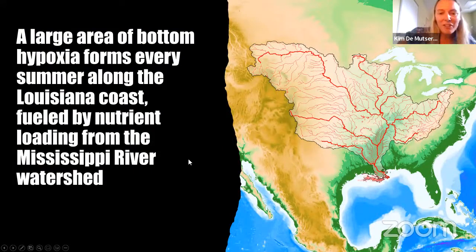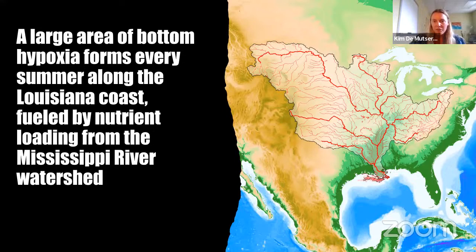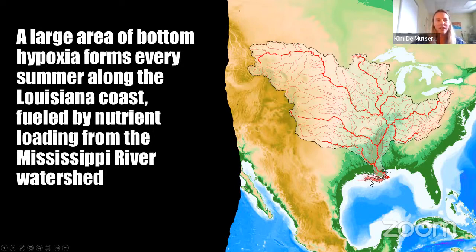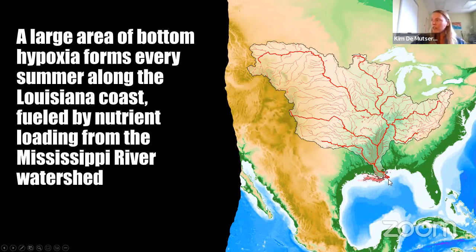Today we're going to Northern America. What you're looking at here is the Mississippi River watershed. Every summer, a large area of bottom hypoxia forms along the Louisiana coast. This is mainly fueled by the nutrients that come out of the Mississippi River. You can see there's a lot of agriculture here that really feeds that river, so there are a lot of nutrients coming out, and a hypoxic area is formed in summer every year in the northern Gulf of Mexico.